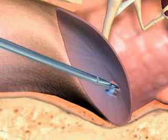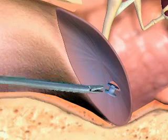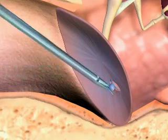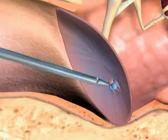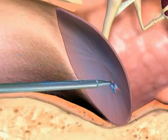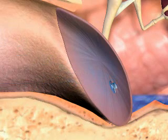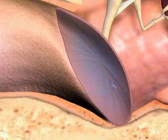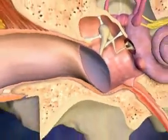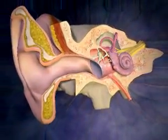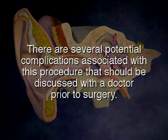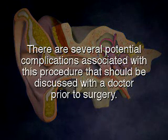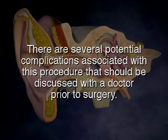A small tube is then inserted into the incision to allow continuous drainage over a period of a few months. Eventually, the incision begins to heal and the tubes fall out naturally as the hole in the eardrum closes. There are several potential complications associated with this procedure that should be discussed with a doctor prior to surgery.